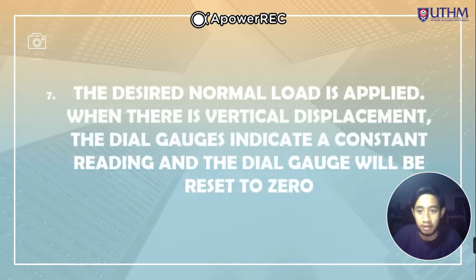Step number seven, the desired normal load is applied. When there is vertical displacement, the dial gauges indicate a constant reading and the dial gauge will be reset to zero.